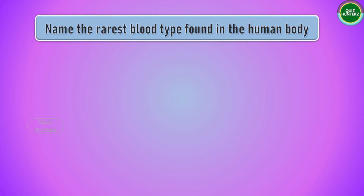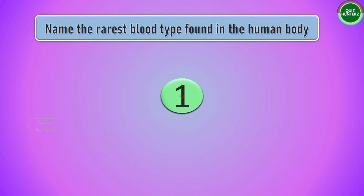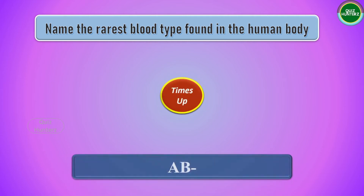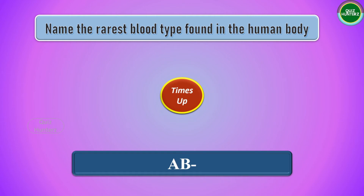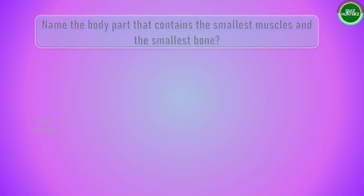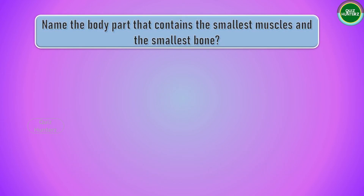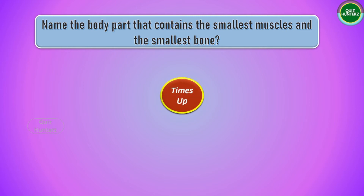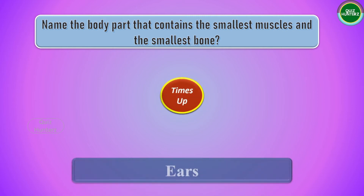The answer is skin. Next question: name the rarest blood type found in the human body. The answer is B negative. Next question: name the body part that consists of the smallest muscle and smallest bone. The answer is the ears.